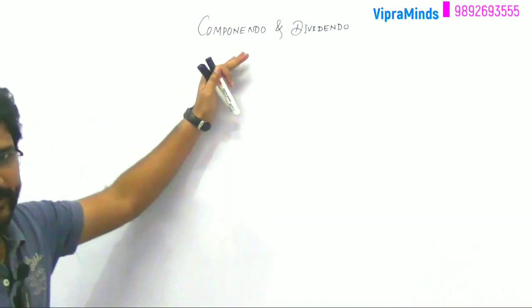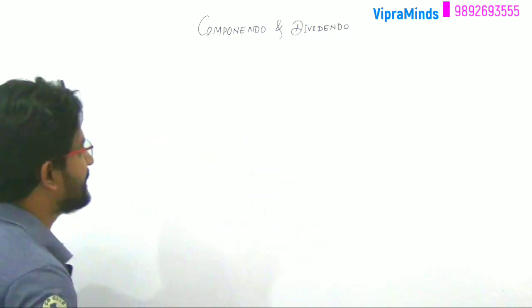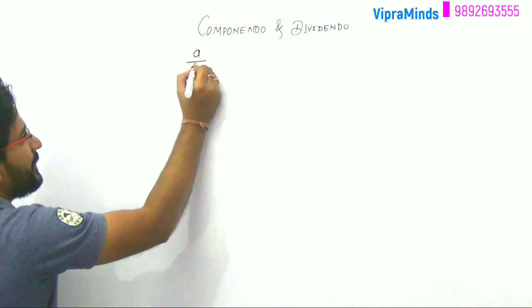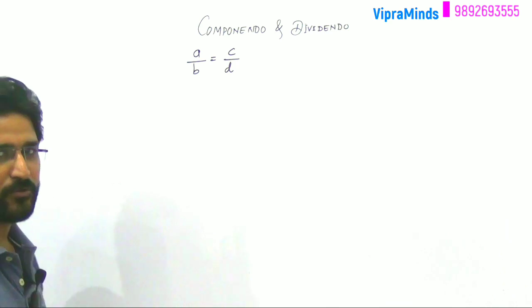Let's start with the properties. The first property is Componendo. Normally Componendo or Dividendo properties we use when two ratios are equal. That means the terms are in proportion. This is a by b equals c by d. These are two ratios and the two ratios are equal.